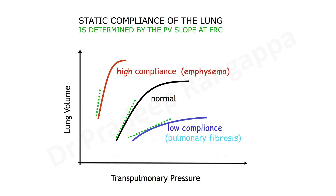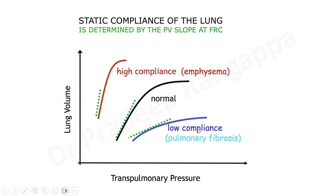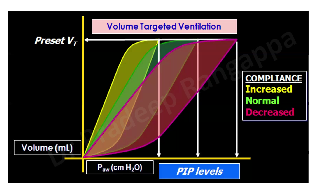This diagram shows how transpulmonary pressure changes with lung volume. In a high-volume condition like emphysema, transpulmonary pressure is lower; in normal lungs it is intermediate; and in low compliance — such as ARDS — transpulmonary pressure is higher. In ventilated patients on volume-targeted ventilation, the red waveform shows low compliance with elevated transpulmonary pressure, the green is normal, and emphysema shows lower transpulmonary pressures on the pressure-volume curve.